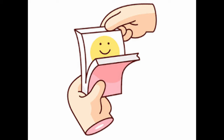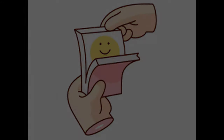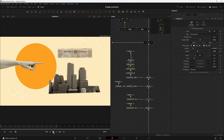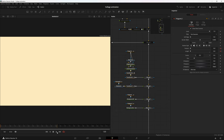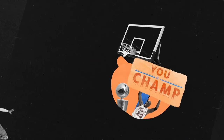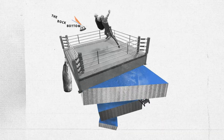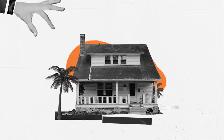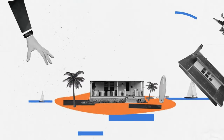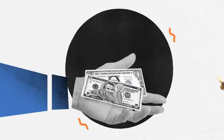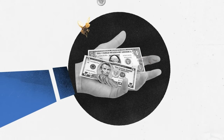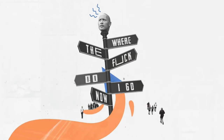Remember those flip books you made by doodling in the corners of your notepad? Collage animation takes that to the digital level. When we flip those digital pages quickly — all the frames — the first frame is our first page and the last frame is our last page. To flip our flip book we just hit the play button, and if you have some motion on your objects, you will have animation. That's what collage animation is all about.